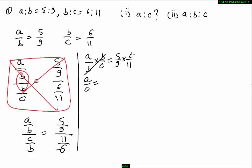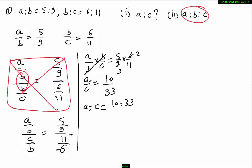Simplifying: 3 twos are 6, 3 threes are 9, giving 10 upon 33. So A is to C is equal to 10 is to 33. Now we need to find A is to B is to C.